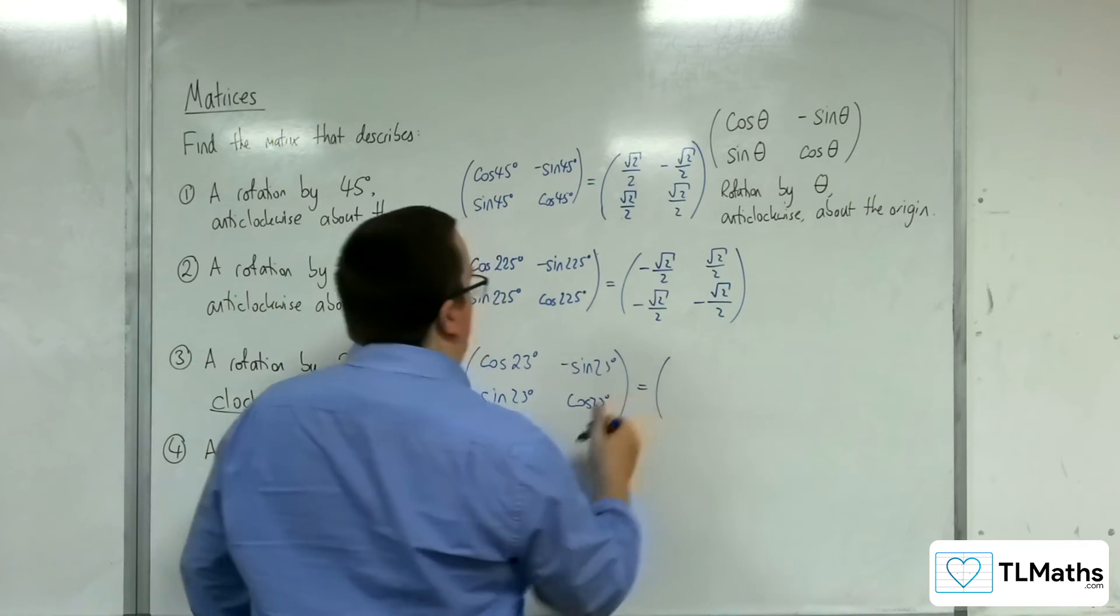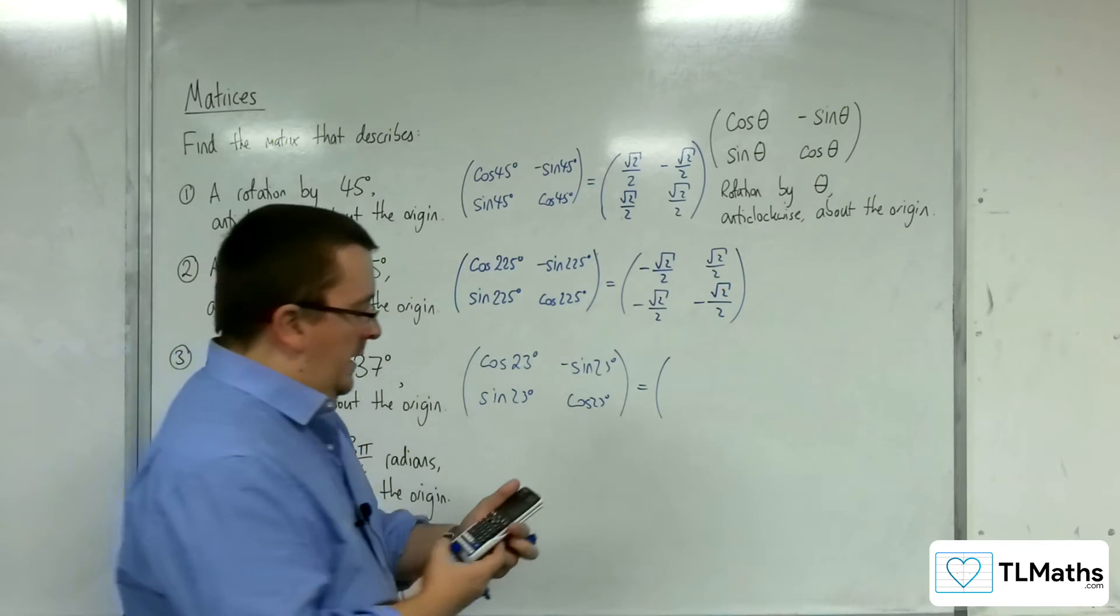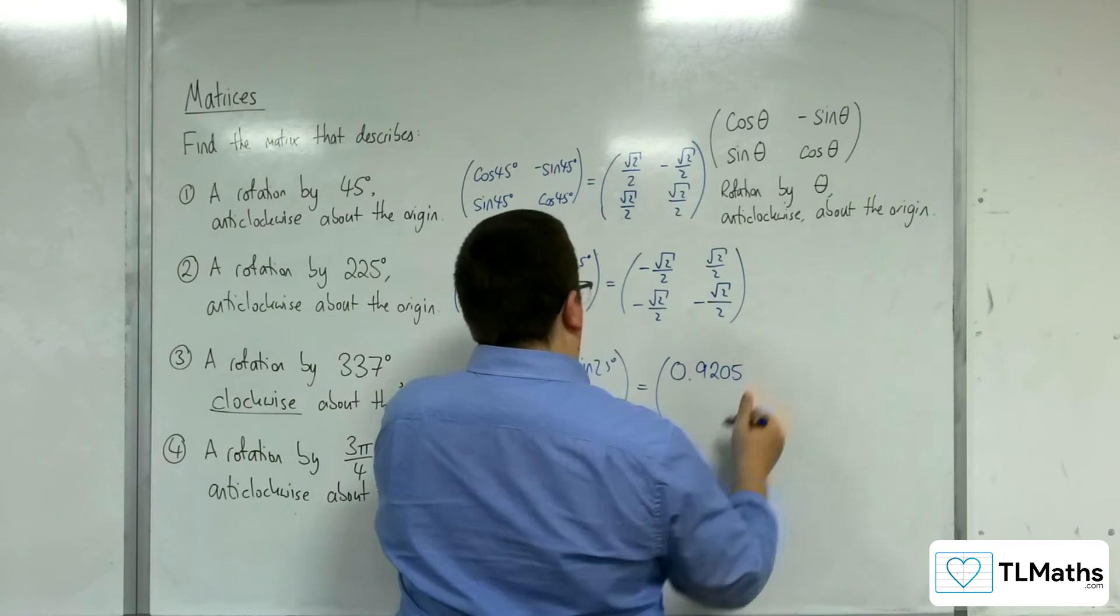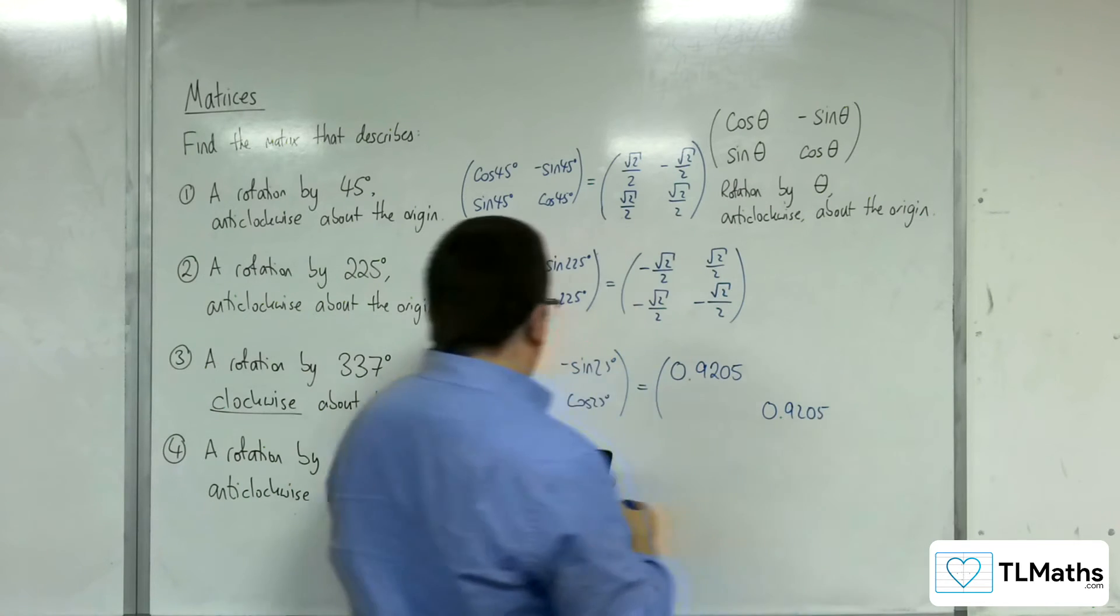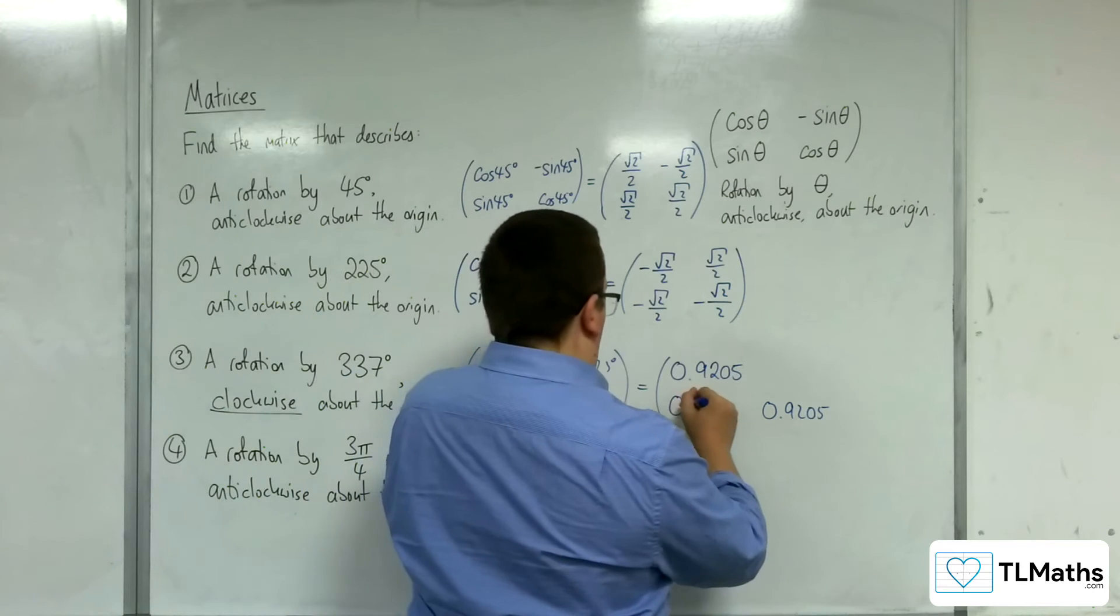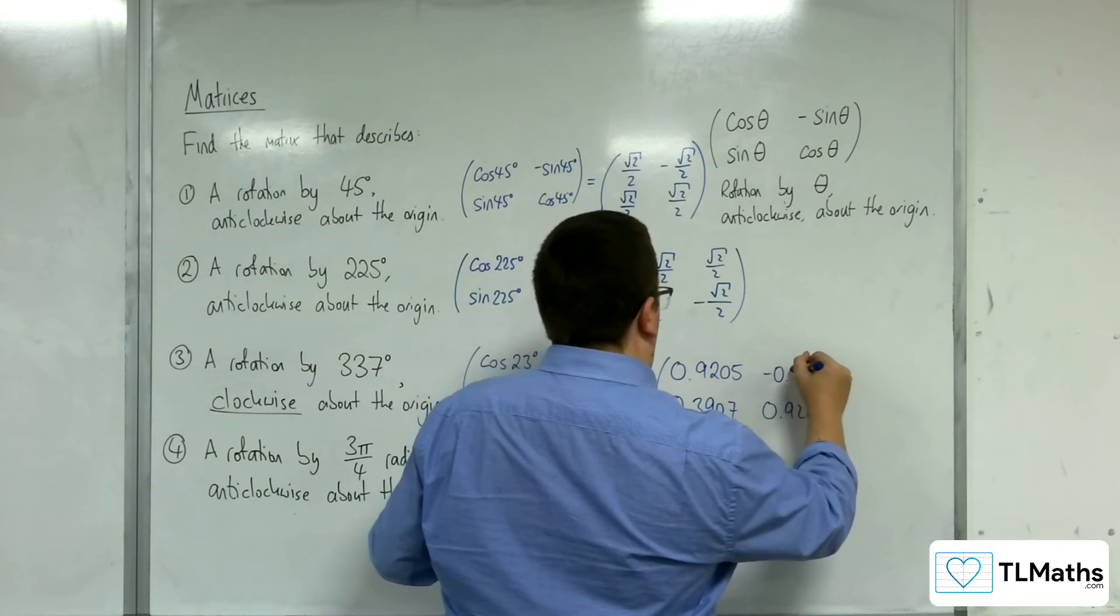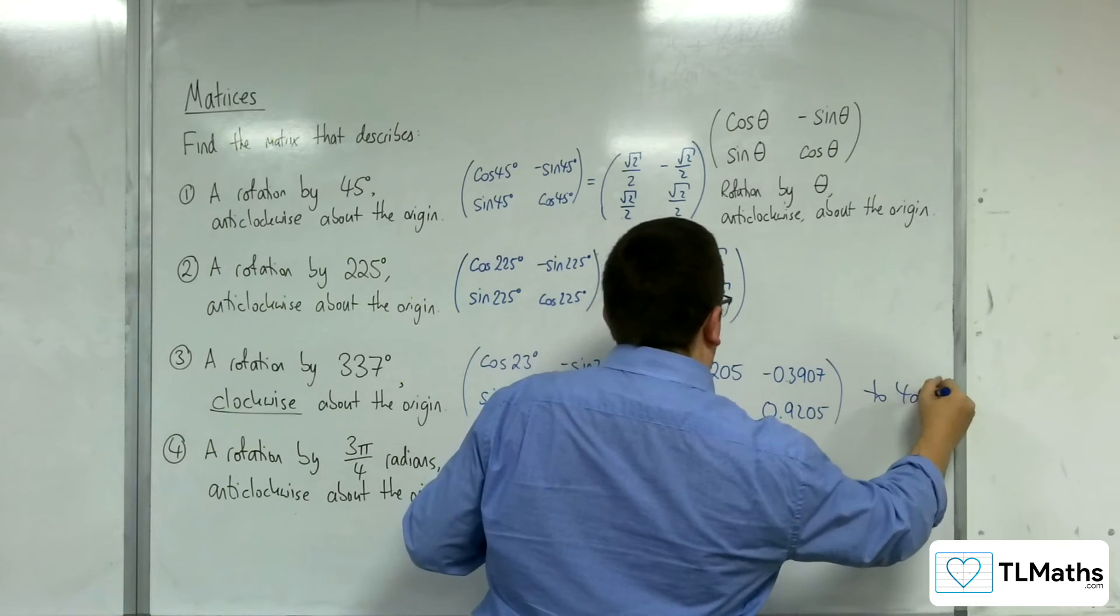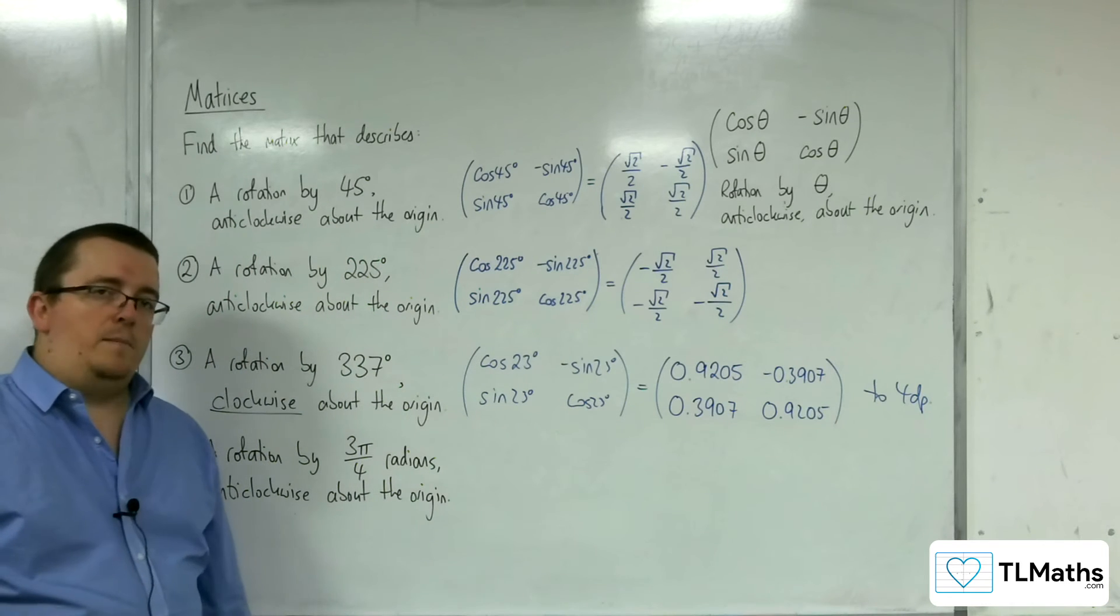Now these won't be nice numbers, so we'll have to write them as decimals. So let's do 0.9205, 0.9205, sine of 23 so 0.3907, negative 0.3907, to four decimal places. And so that's how we can get our matrix.